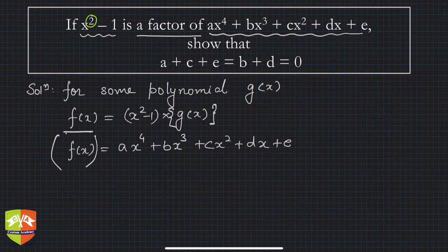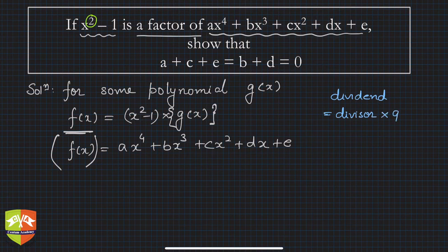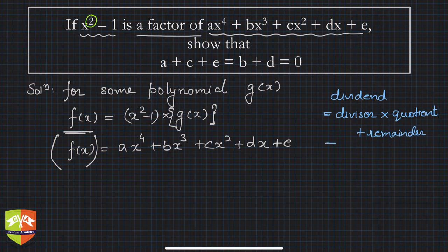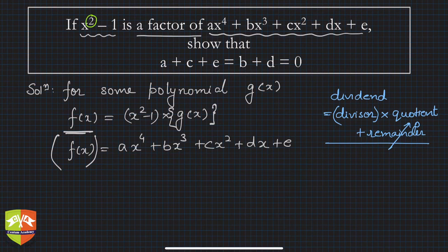If you remember our basic equation: dividend = divisor × quotient + remainder. For polynomials also it holds, as we've seen in previous sessions. Here the remainder is 0 because x² - 1 is a factor — the divisor is a factor, so the remainder has to be 0. Only when the remainder is 0 can we say the divisor is a factor of the dividend.